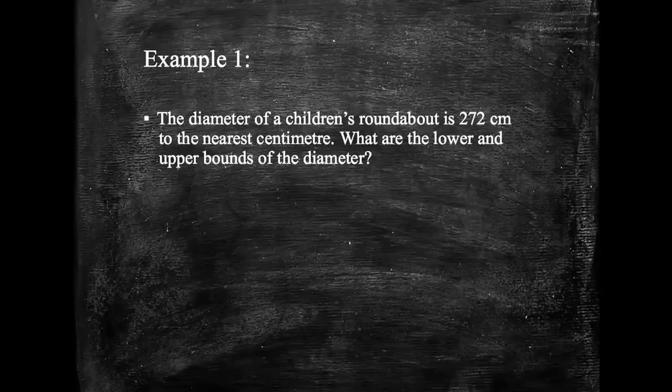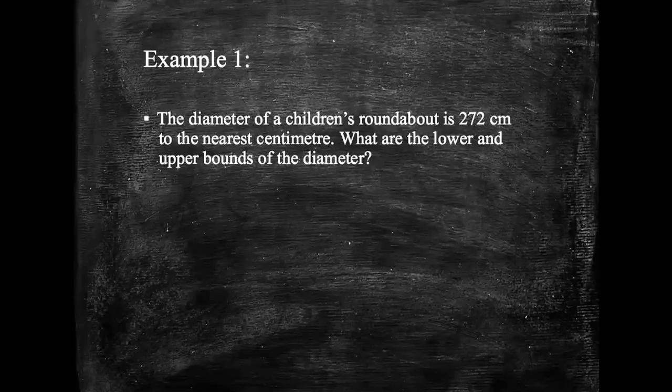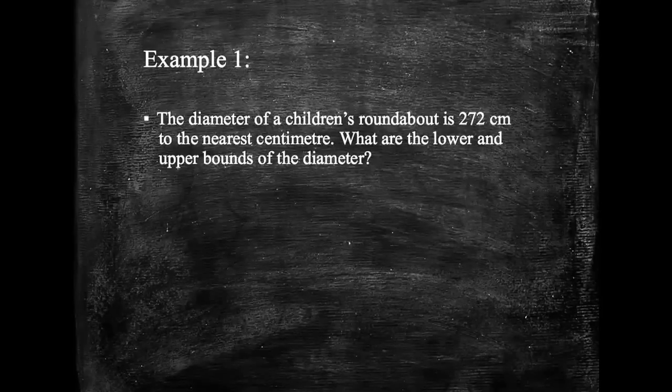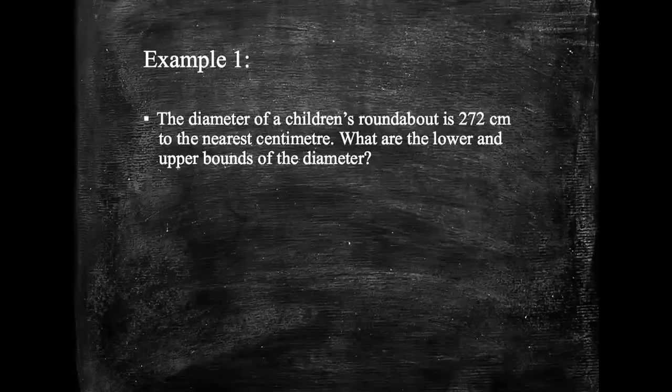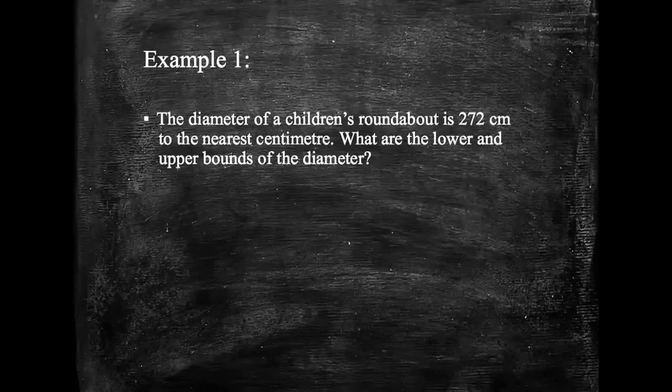Okay, so when we're talking about upper and lower bounds, let's see if we can define what it is that we're talking about. In this example, it says the diameter of a children's roundabout is 272 cm to the nearest cm. So it's been rounded to the nearest cm. What are the lower and upper bounds of the diameter?